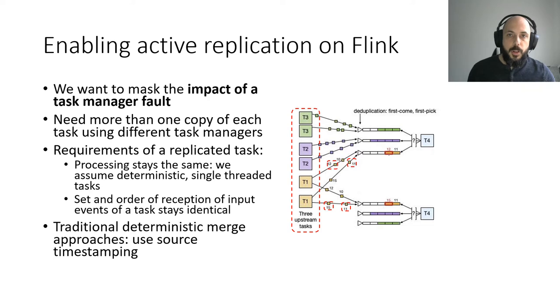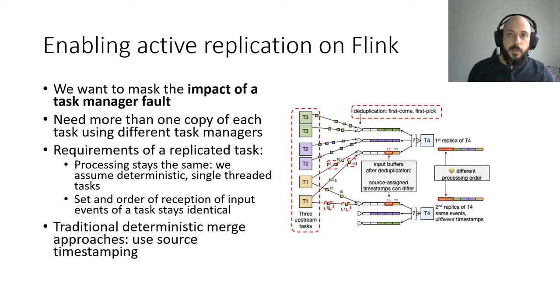In this approach, each event is labeled with a timestamp. To support the failure of a task manager, we need to take the first incoming event into account. But with the timestamping being done on each origin replica, the timestamp can differ. This can cause a different order of processing in the case of multiple origin tasks. This method does not respect consistency.